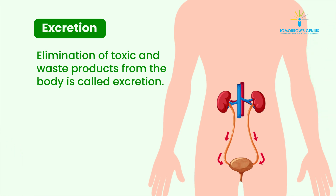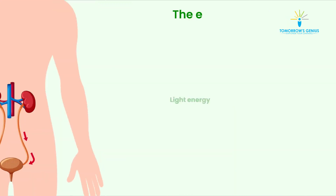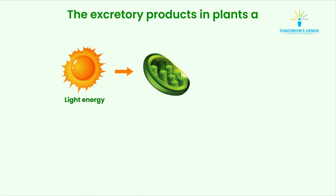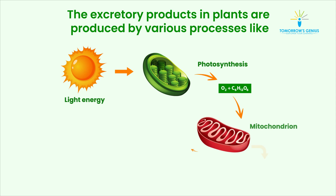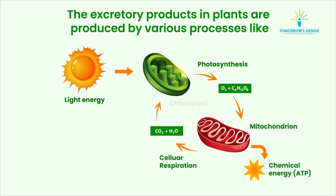Organisms like animals have an advanced and specialized system for excretion, but plants lack a well-developed excretory system like that in animals. The excretory products in plants are produced by various processes like cellular respiration, photosynthesis, and other metabolic reactions.